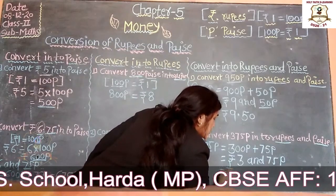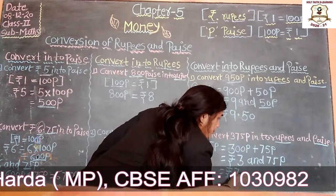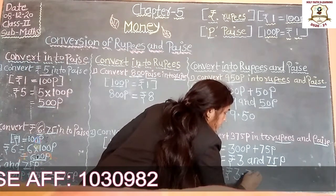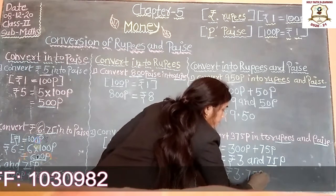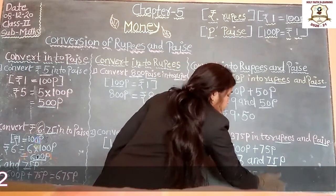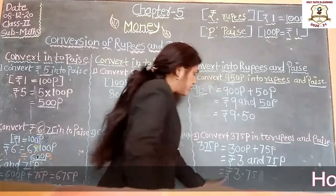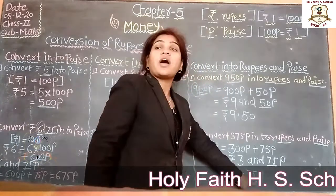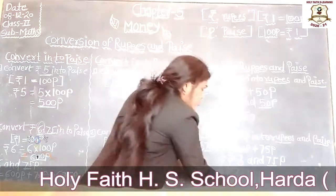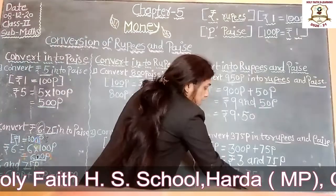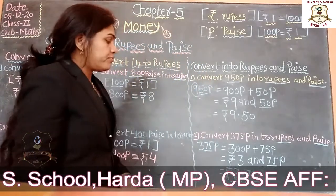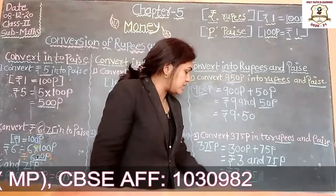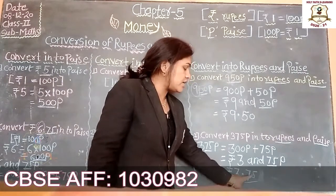So we write this as rupees 3.75 paise — meaning rupees 3 and 75 paise.